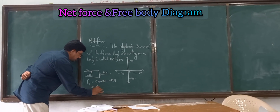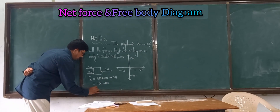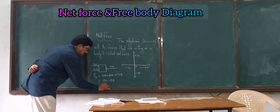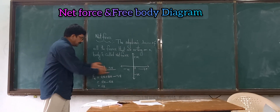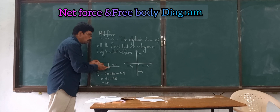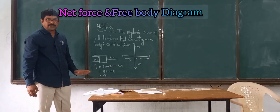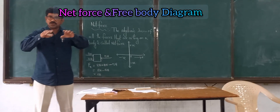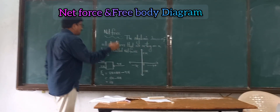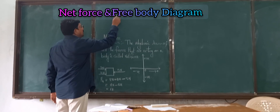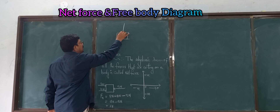8 plus 10 is 18, and 18 minus 12 equals 6 newtons. The net force is 6 newtons. So the body moves towards the right side. As the force is unbalanced, the body moves in the direction of the net force.